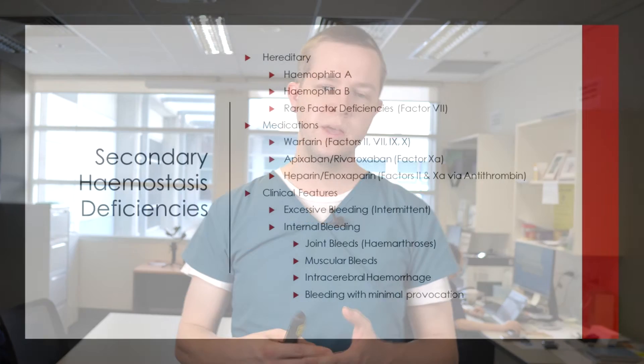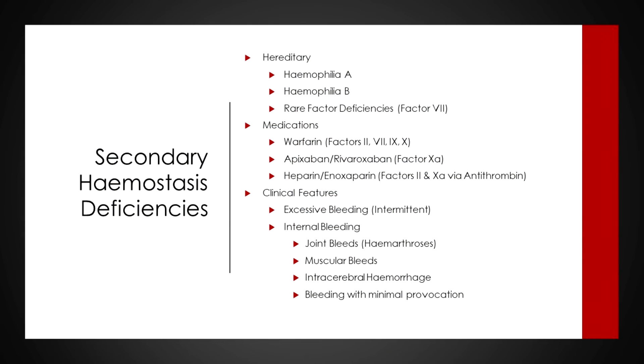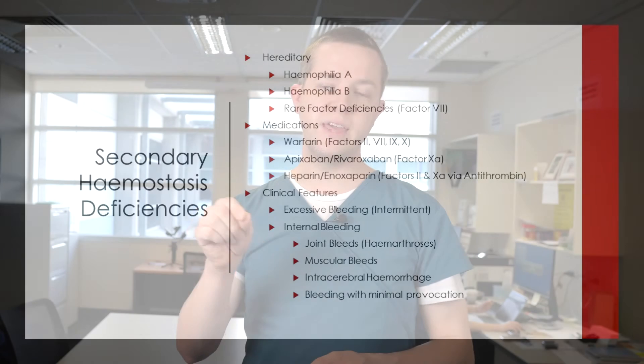There are also many medications that affect secondary hemostasis. Warfarin affects factors 2, 7, 9, and 10 through vitamin K antagonism. Newer agents like apixaban and rivaroxaban inactivate factor 10a when it's formed, thereby reducing the activation of prothrombin to thrombin — note that 'xaban' in their names refers to factor Xa, helping you remember their mechanism. Heparin and enoxaparin are heparin-based medications that primarily affect factor 2 and factor 10a via antithrombin, increasing antithrombin's activity to reduce factor 10a and factor 2 activation.